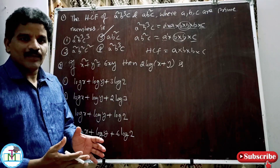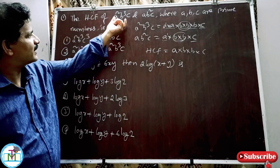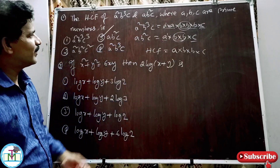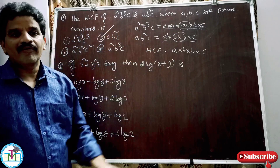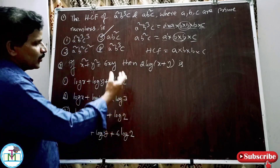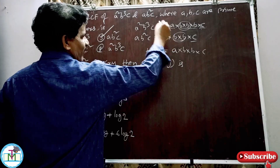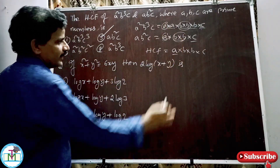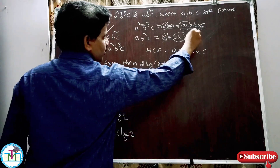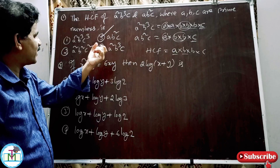HCF and LCM problems are very important. To summarize: the two numbers are A²B³C and AB²C, where A, B, C are prime numbers — already prime factorized. For HCF, take the minimum power of each common factor: A is common (take A), B² is common in both (take B²), C is common (take C). So HCF = AB²C, option 3 is correct.